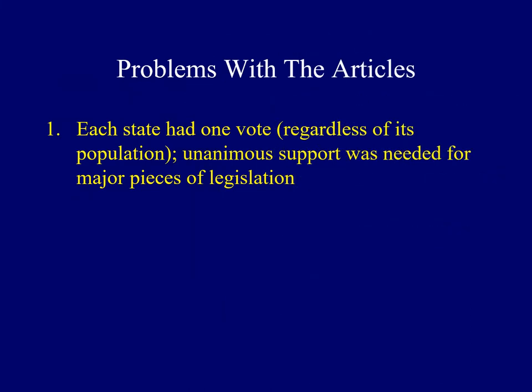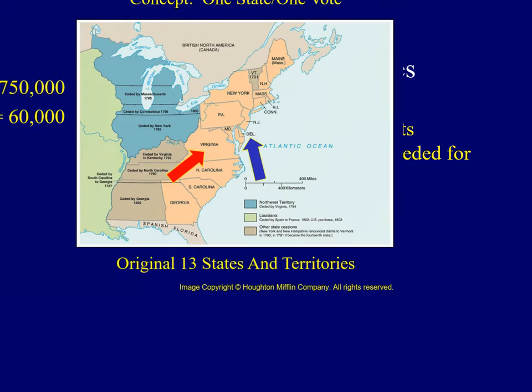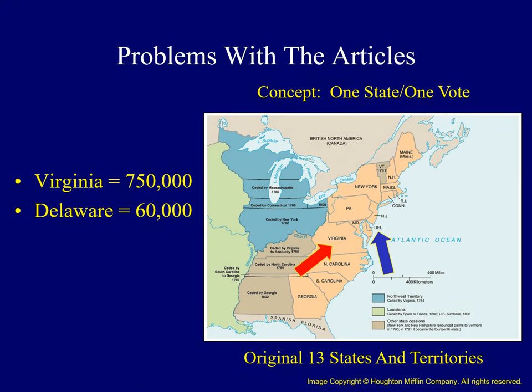For legislation to pass, support had to be unanimous. Each state had one vote regardless of its size or population, which proved troublesome to representatives from some states. The concept was that each state should be equal in power, meaning the largest state, Virginia, with a population of about 750,000 inhabitants, was on equal footing with the smallest state, Delaware, with its population of only 60,000.